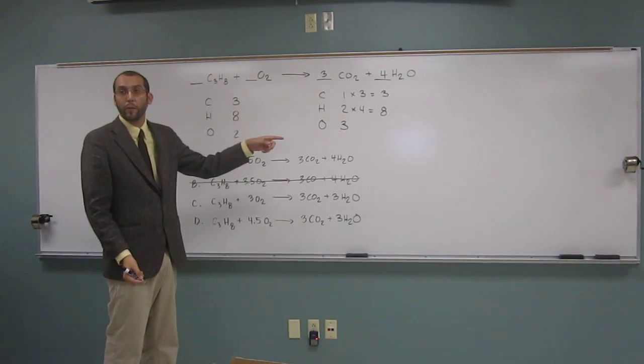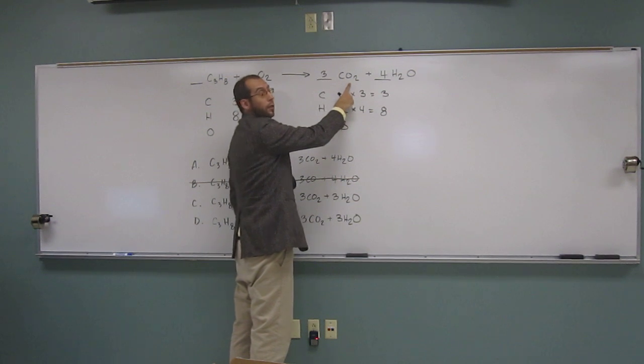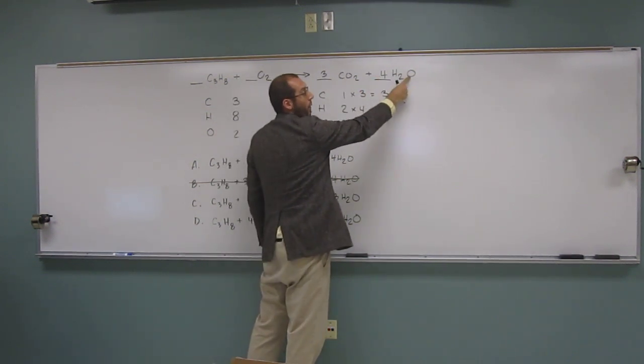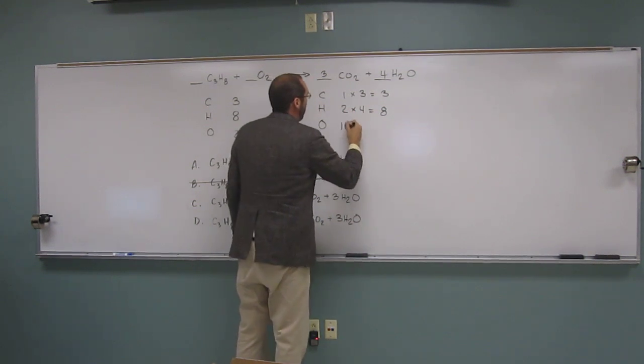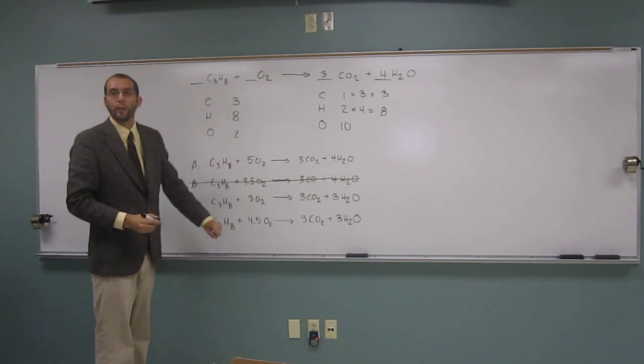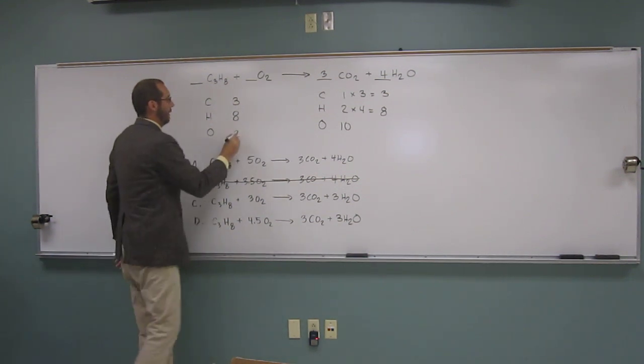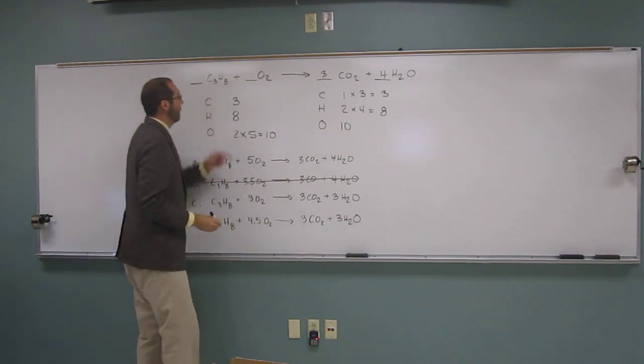So now let's ask ourselves how many oxygens we have. So three times two is what? Six. Plus four is what? Ten. Ten. So let's erase this thing. So that's how many we have now. Two times what equals ten? Five. Five. So we multiply that by five. That equals ten.